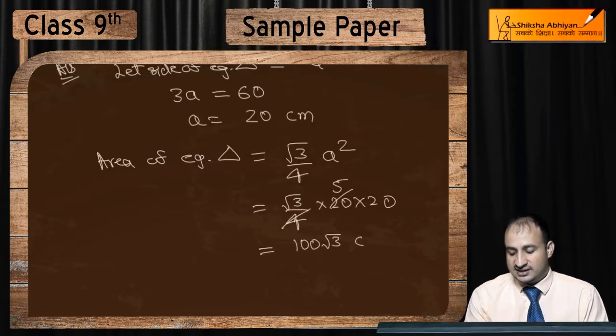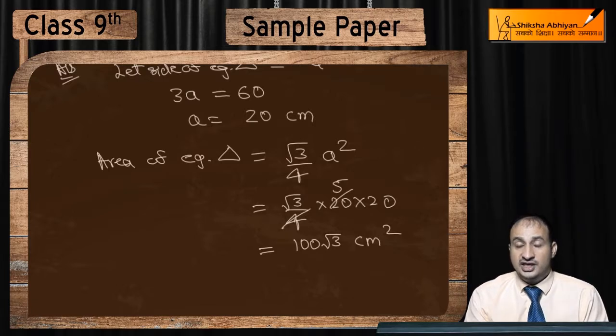So 100 root 3 cm square, because it's area, so the unit will be in square. So 100 root 3 cm square is the area.